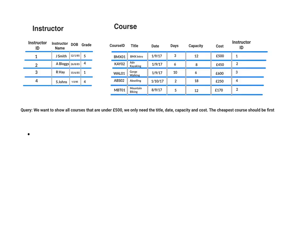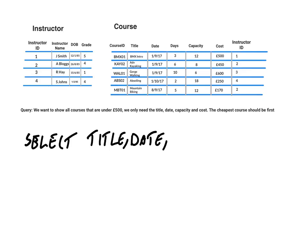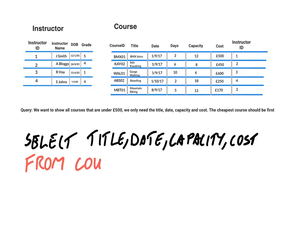The first part is SELECT, and this is where we put the field names: title, date, capacity, and cost. The next part is to specify the table it's coming from — in this case it's the course table, so FROM course. The next part is the criteria: the cost of the course is under £500, so WHERE cost is less than 500.